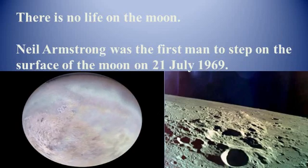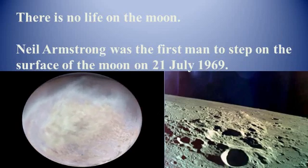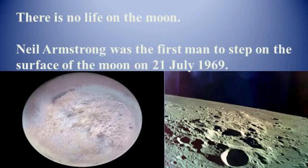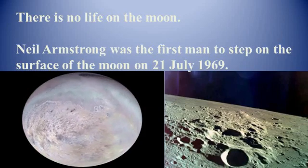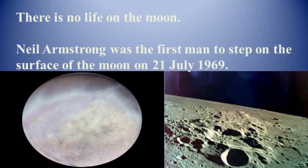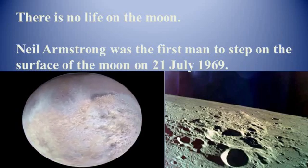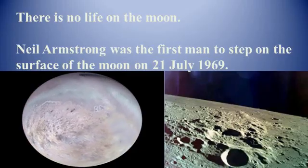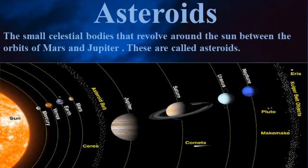Man has always been fascinated by the Moon. During the 1960s, many space crafts were sent to the Moon. On 21st July 1969, man's dream of going to the Moon came true — Neil Armstrong became the first man to walk on the Moon. Between the orbits of Mars and Jupiter, there are numerous tiny bodies that move around the Sun — these bodies are called asteroids. Many astronomers believe that asteroids are fragments of a planet which exploded a long time ago.